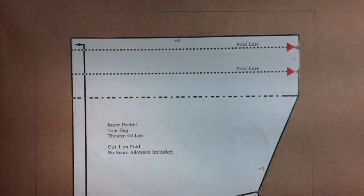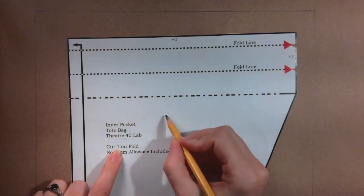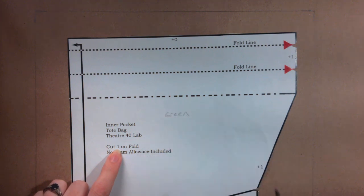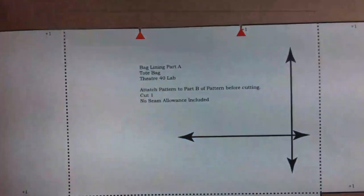Decide which pieces are going to be cut out of which fabrics. Write the color or type of the fabric on each pattern piece. Do the same for the twill flat lining. This will help you cut the right pieces out of the right fabric.